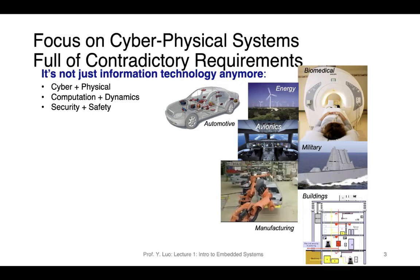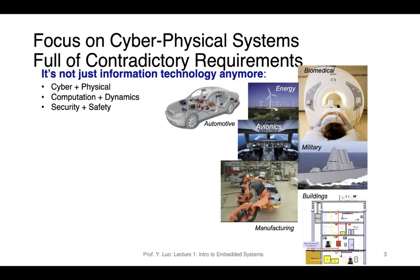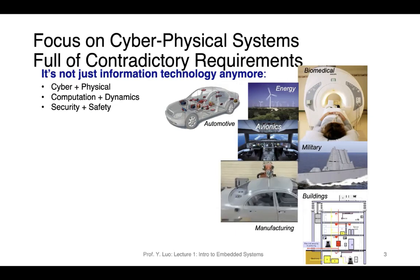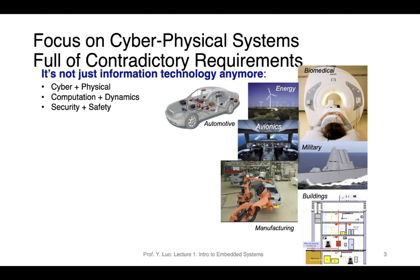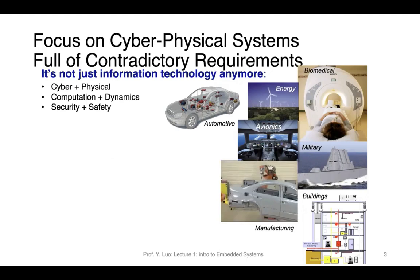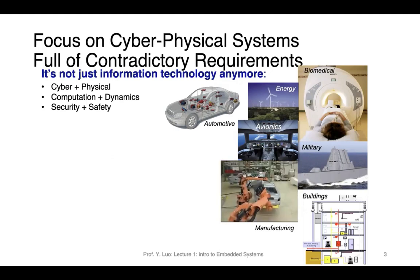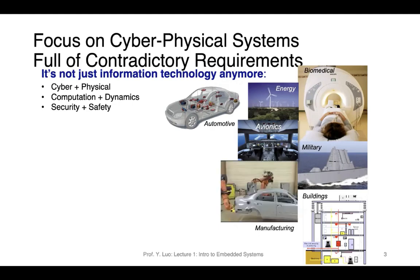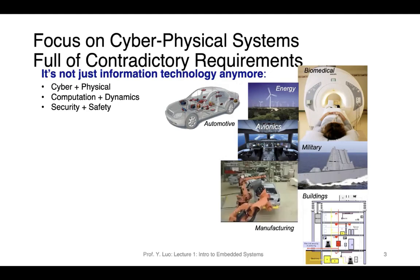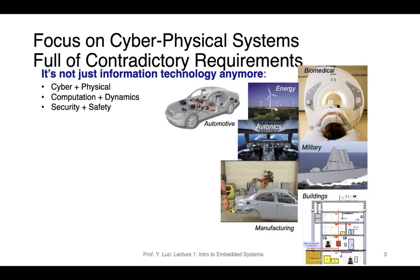The dynamics could be continuous or discrete. Like a robotic arm — it moves continuously. But for buildings, the dynamics could be flipping a switch on or off: two states. In these different application domains, there are different requirements on security and safety, which require us to design systems by considering different requirements and capabilities.